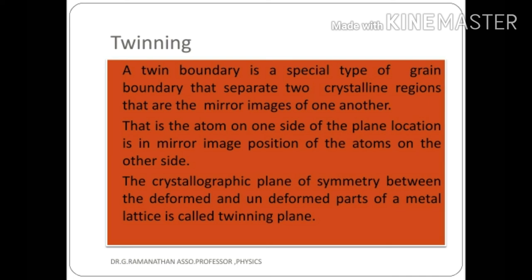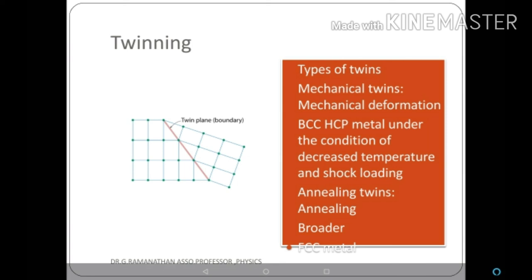Twinning is a special type of grain boundary separating two crystalline regions, where one is the mirror image of the parent. The crystallographic plane of symmetry between the deformed and undeformed parts of a metal lattice is called the twinning plane. There are two types: mechanical twins, produced by mechanical deformation, occurring in BCC and HCP metals under conditions of decreased temperature and shock loading; and annealing twins, produced by the annealing process, occurring in FCC metals.